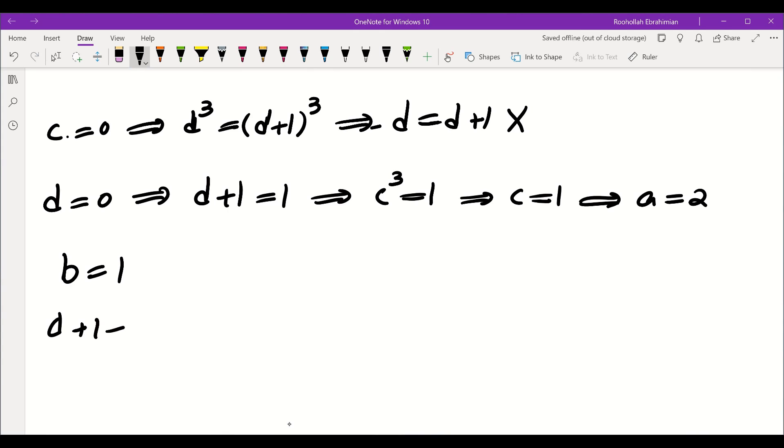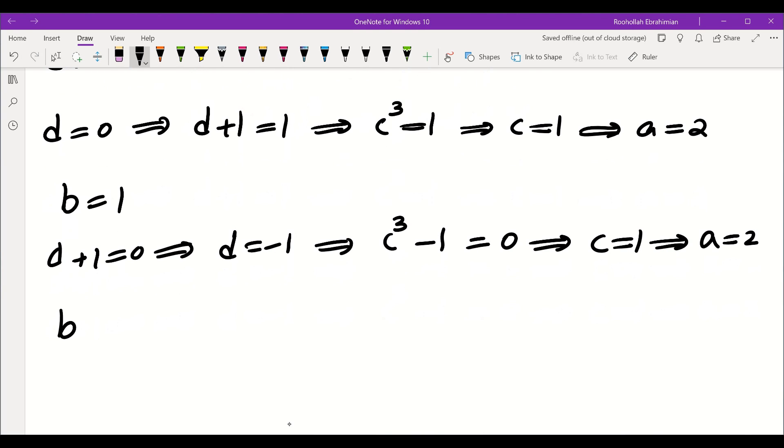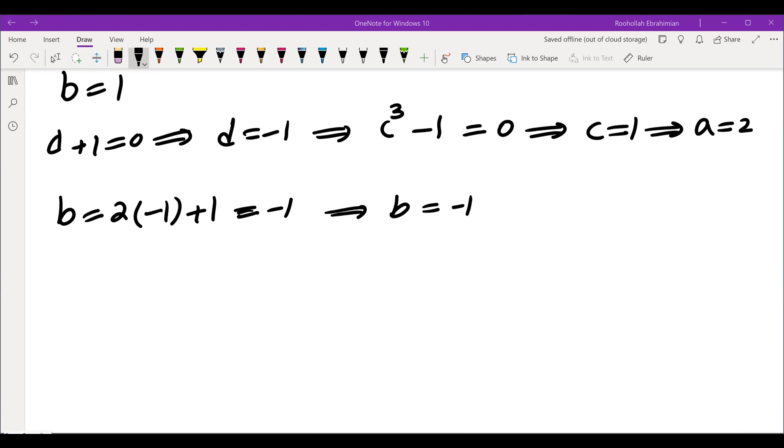If d plus 1 is 0, that means d is negative 1. So we get c cubed minus 1 is equal to 0, which means c is again 1. So that gives me a equals 2, but b is going to be 2d plus 1, which is negative 1. So this gives me b equals negative 1. So that means we get two solutions. a equals 2 and b equals plus or minus 1.